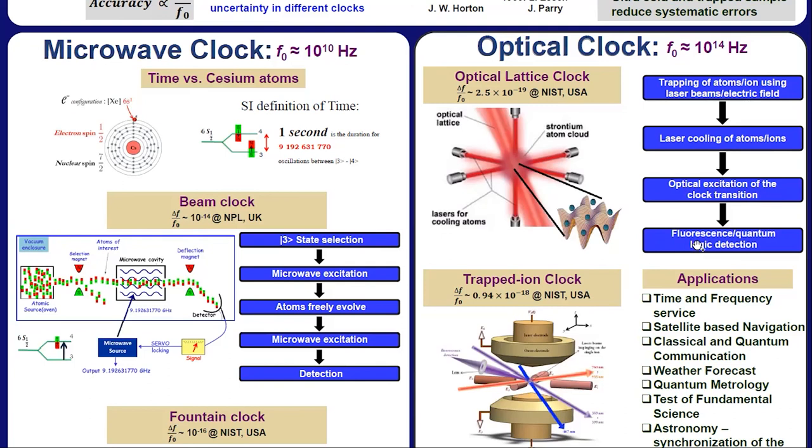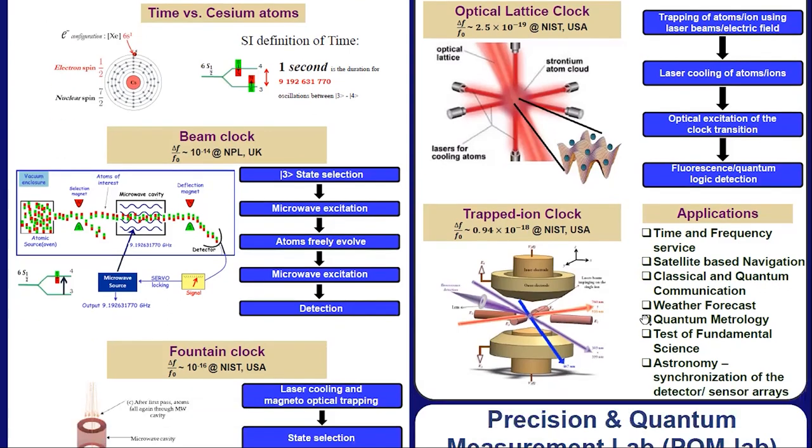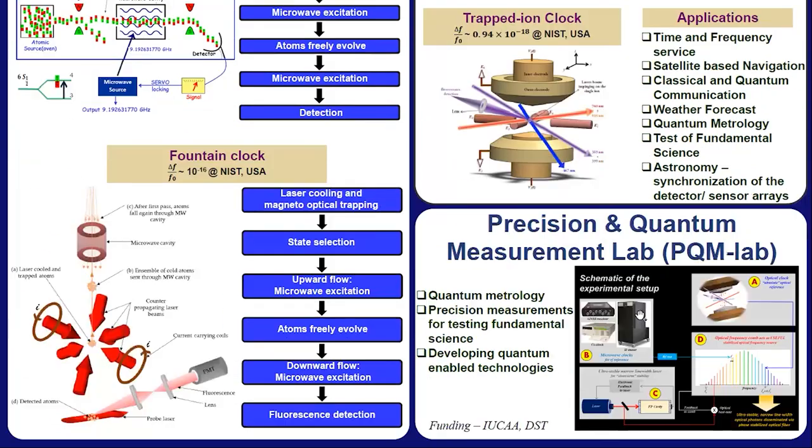Although the accuracy of caesium clock which is mostly used nowadays is good enough for most of the human activities, it is not sufficient in several applications that require very precise timekeeping. For example, in navigation system, it is only due to such an accurate atomic clock we are able to track a location within few meters. In precision and quantum measurement lab, we are developing a trapped ion clock which will be used for several applications.